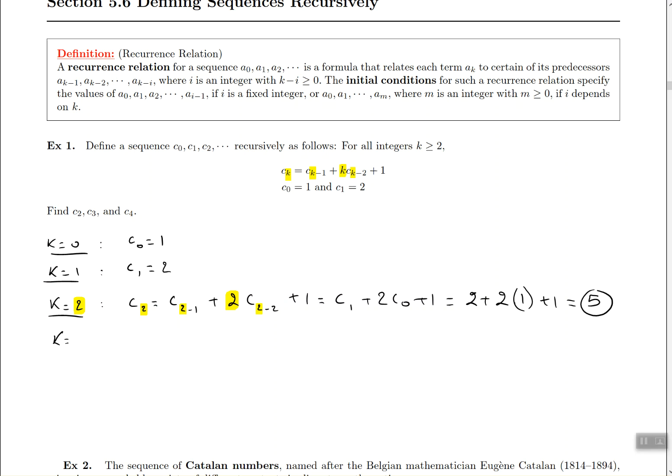Now what about C3? Similar to what we just did, we're going to replace all the k's with 3, which results in C2 plus 3C1 plus 1. So I'm adding the C2 which is the number I just got, 5, plus 3 of the C1s which were 2, and 1 at the end. So that's 5 plus 6, that's 11, plus 1 is going to be at the end 12.